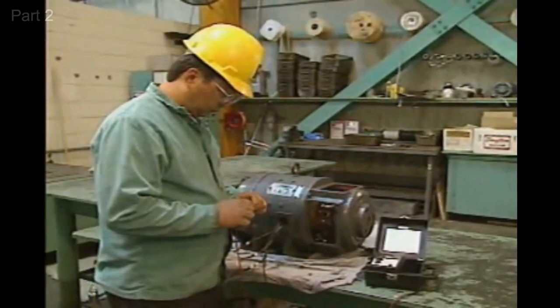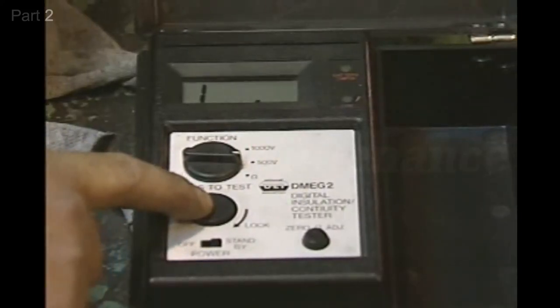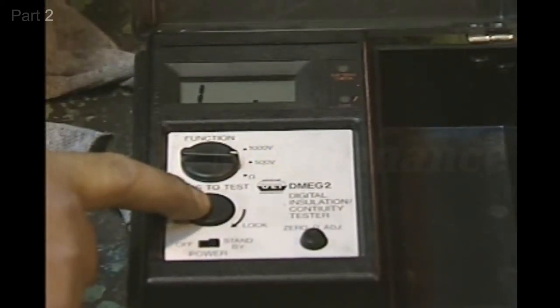Next, separate the probes and operate the meg-ohm meter again. This time, it should indicate infinite resistance. The digital readout on this meg-ohm meter indicates infinite resistance by displaying a blank readout except for the number 1, which appears all the way to the left.